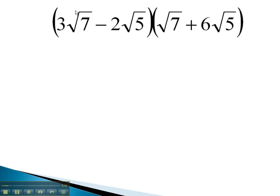In this problem, we'll start by distributing the 3 root 7 through, times the root 7. The 3 has nothing to be multiplied by, and so inside the radical, we've got 7 times 7, which is 49. Continuing to distribute through, 3 times 6 is 18, and inside the radical, 7 times 5 is 35.